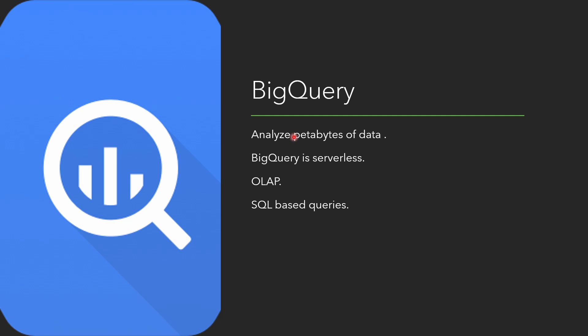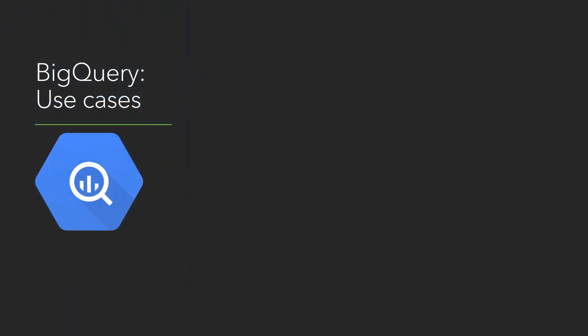You cannot go back like a normal database and do update operations on BigQuery. However, you can run normal SQL-based queries, which is a huge advantage if you are familiar with SQL. BigQuery is immutable — you're going to append data, not modify it. The best equivalent in cloud is Redshift from AWS, which is also a data warehousing solution.